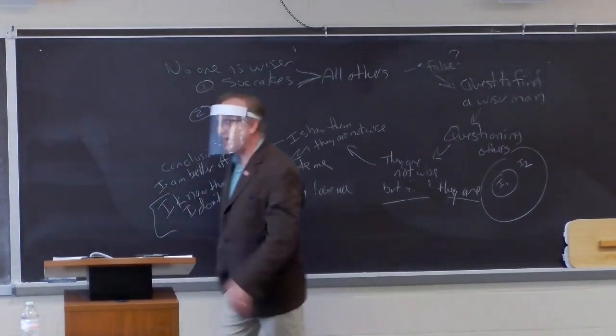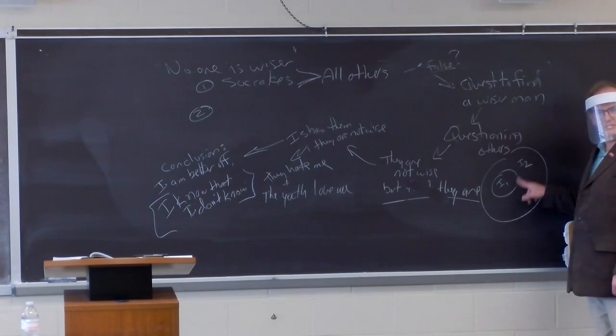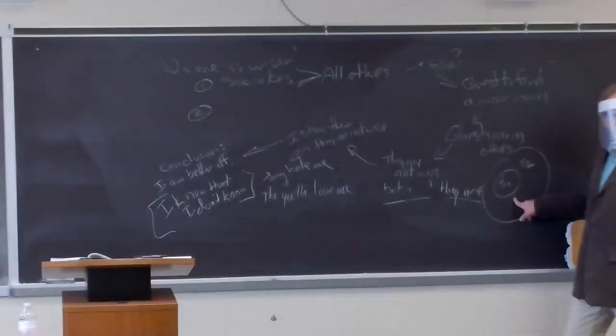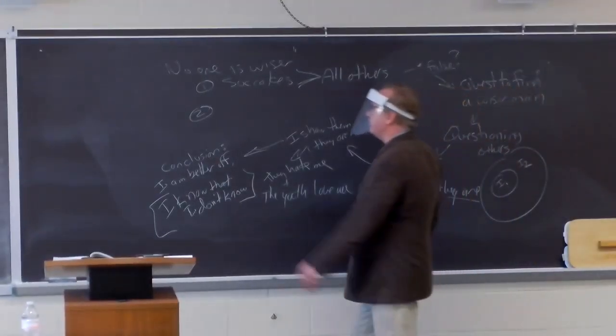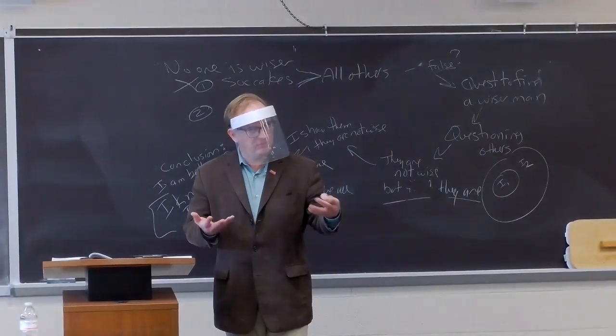Socrates says, I'm at the very least trying to point out to them their level two ignorance so they can fix their level one ignorance. So his conclusion here is second interpretation. He rejects his first interpretation as just being false.